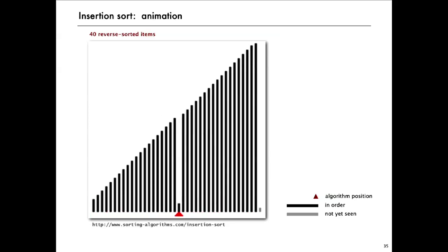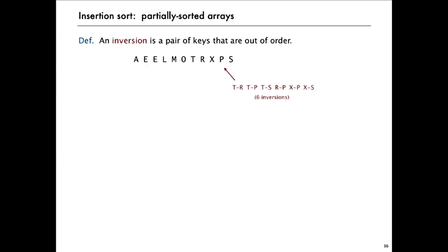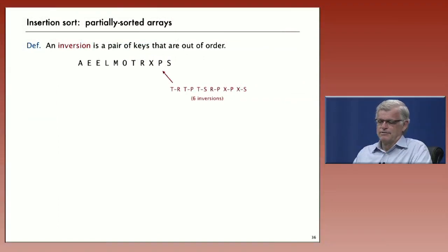But there's also a good case that actually we take advantage of in plenty of practical applications. And that has to do with when the array is partially sorted. To talk about this in a quantitative way, we define what's called an inversion. An inversion is just a pair of keys that are out of order in the array.